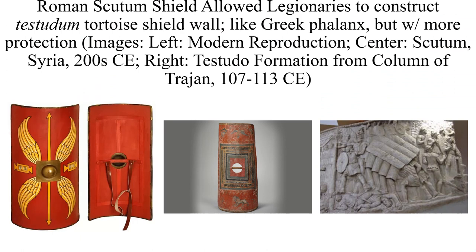Here is the Roman scutum shield. The Romans liked oblong shields, but this one is more rectangular and convex — pointing outward. This convex design provides better protection and allows them to form the testudo, or tortoise shield wall, much like a Greek phalanx but more protective. The convex shape on the upper layer also allowed legionaries to see, charge their enemies, and use a gladius sword — both seeing and fending off enemies while in testudo formation.